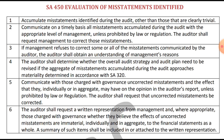The second point is to communicate, on a timely basis, all the misstatements accumulated during the audit with the appropriate level of management, unless prohibited by regulation. The auditor shall request the management to correct those misstatements. So the auditor will communicate those misstatements to the management and ask them to rectify or correct the misstatements.